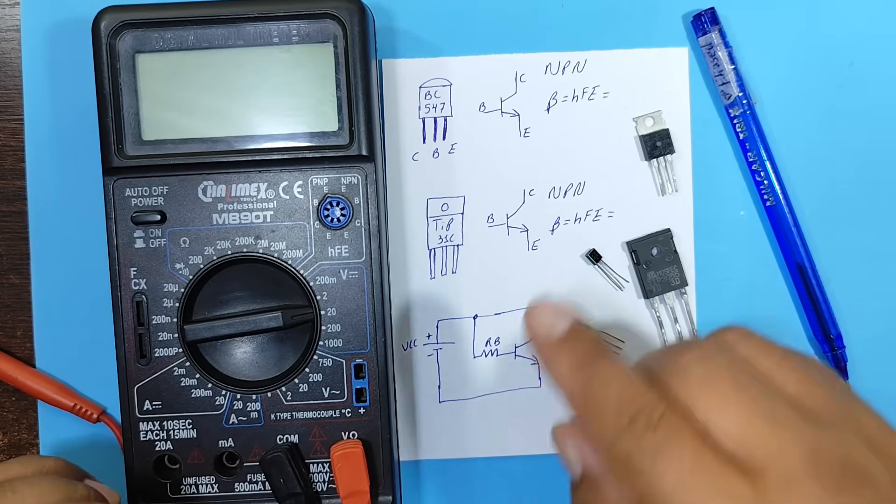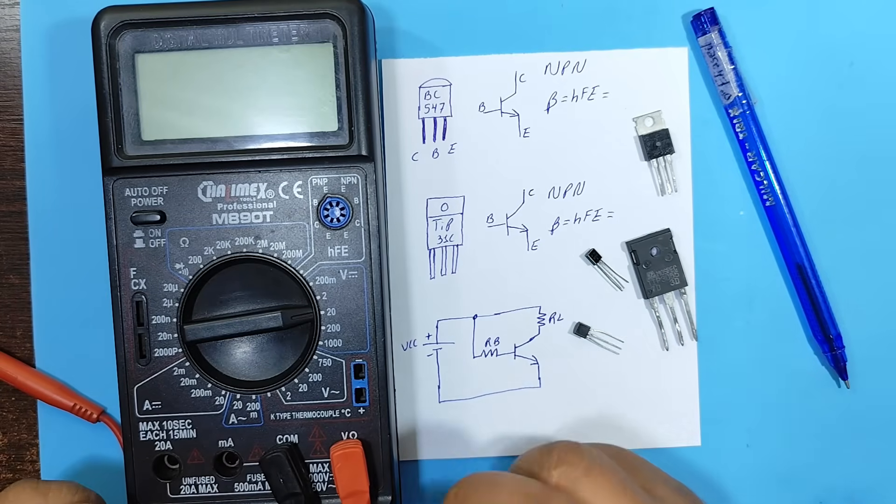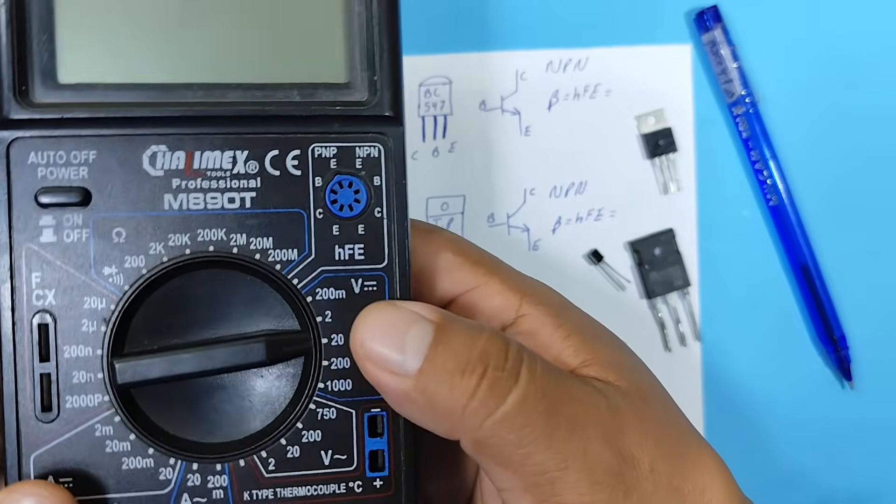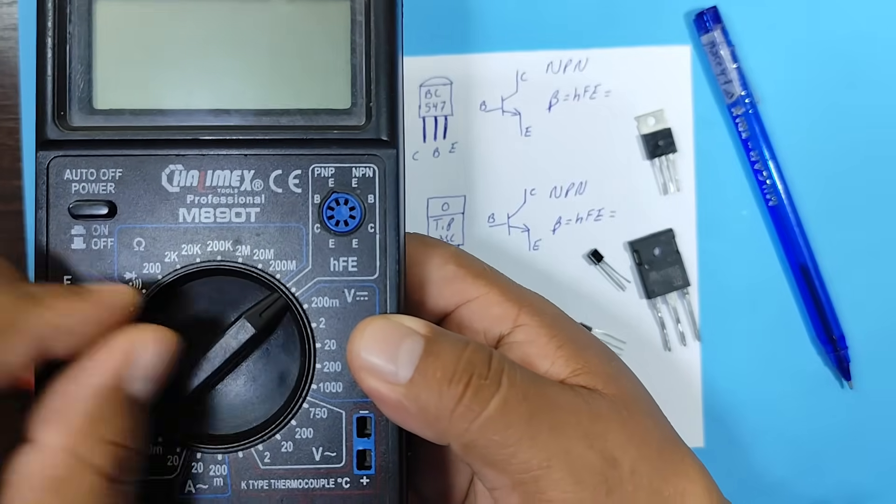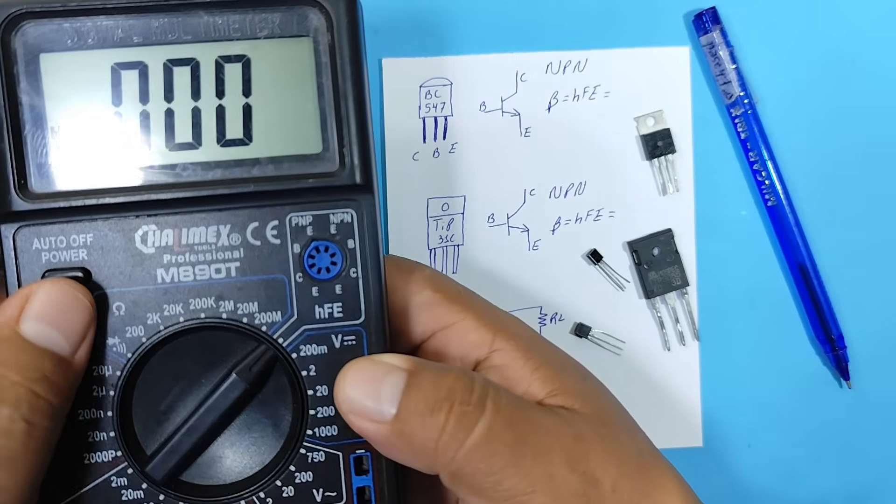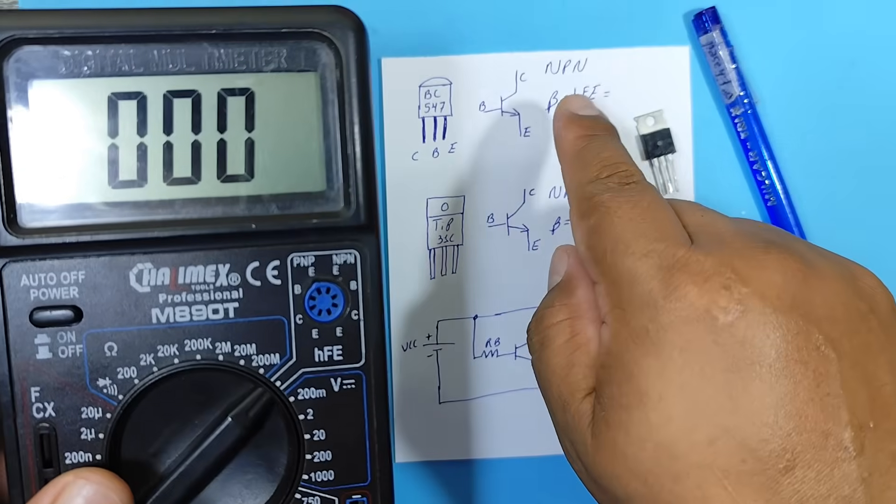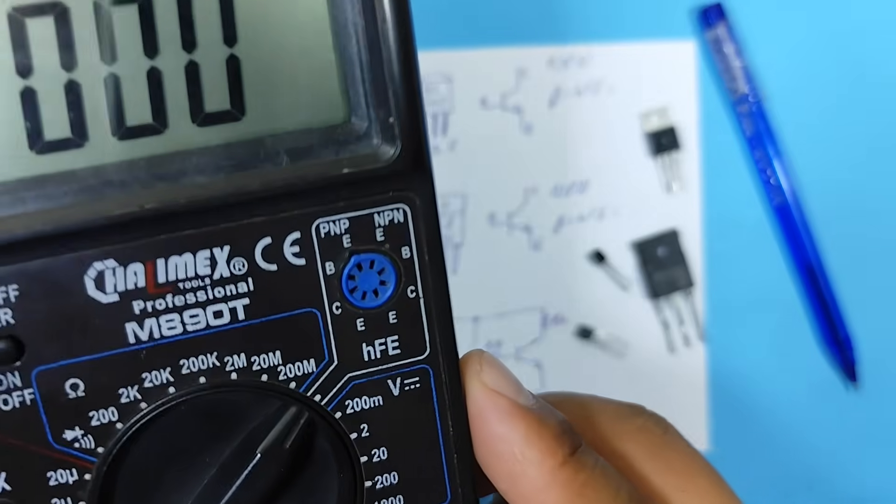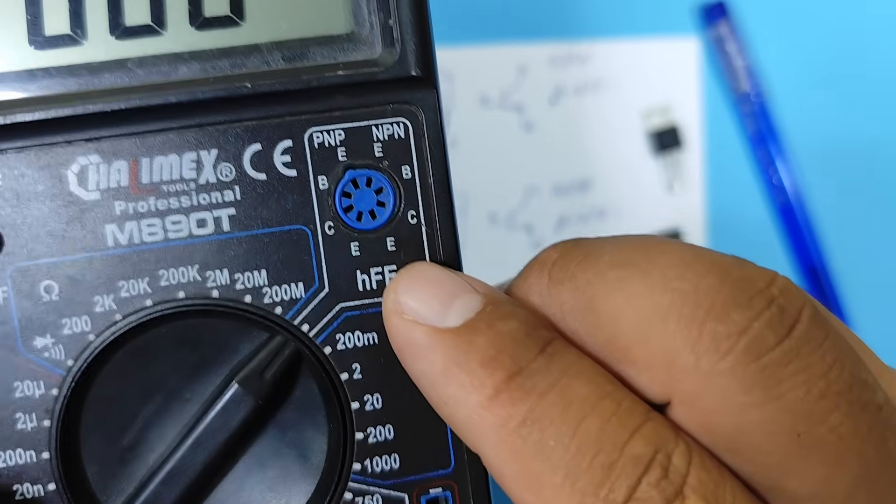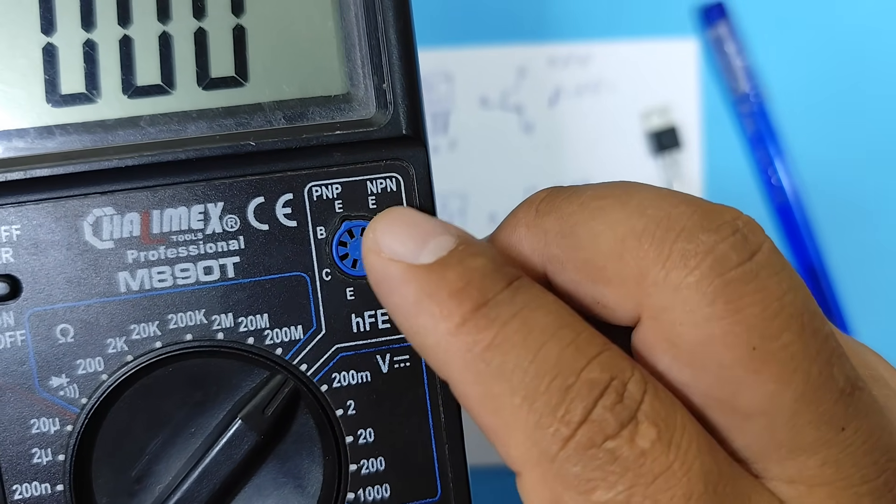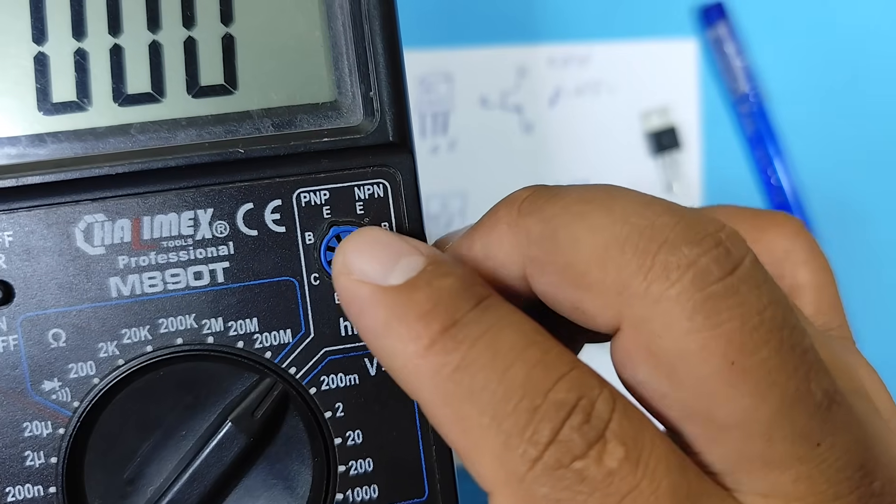Very good. Now we are going to measure the gain of our transistors with our multimeter. To do this, we'll set our multimeter to the HFE scale. And on the screen we should see HFE, or beta. If you look closely, our multimeter on that scale tells us to select the transistor based on whether it's an NPN type, or a PNP type.